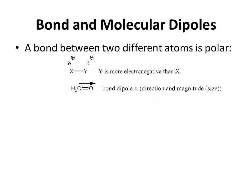This bond dipole has both direction, where the arrow is pointing, and size, or magnitude — the length of the arrow — which depends on how much the charge is being separated, and that depends on the difference in the electronegativity of the two atoms.